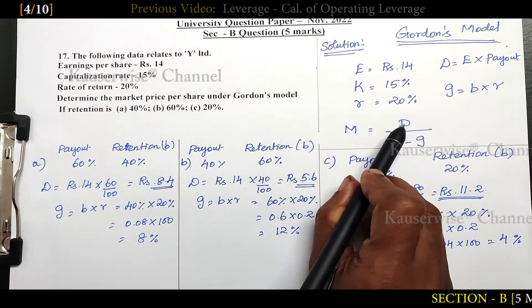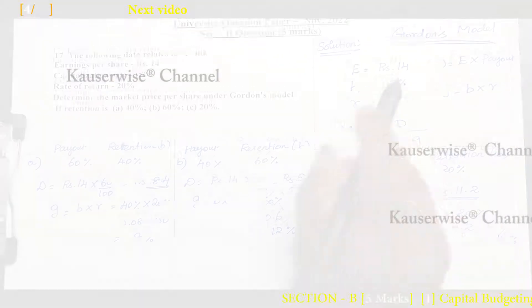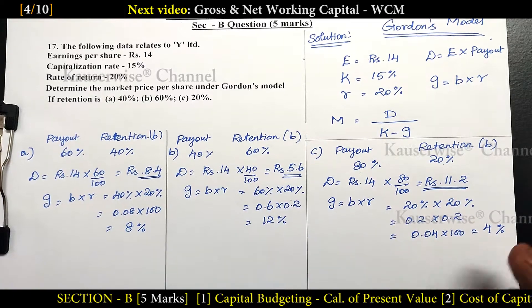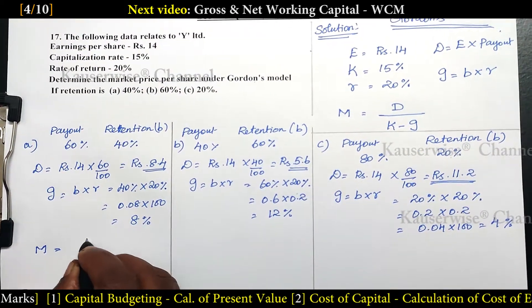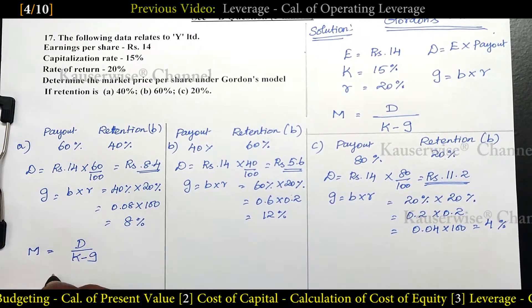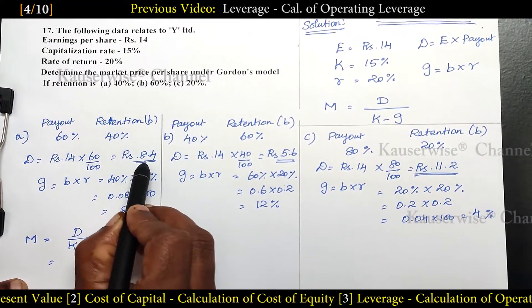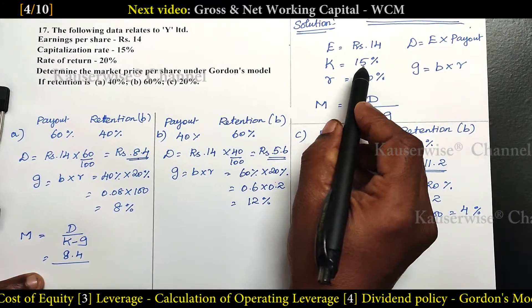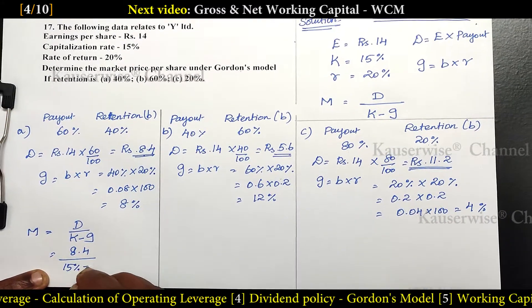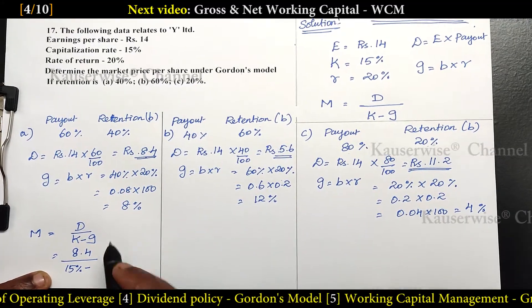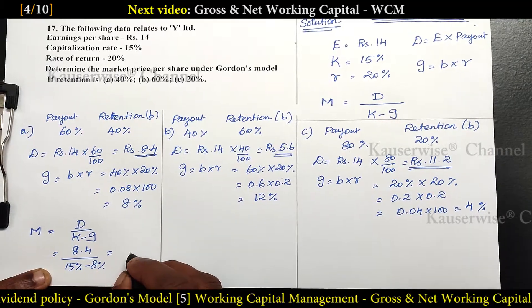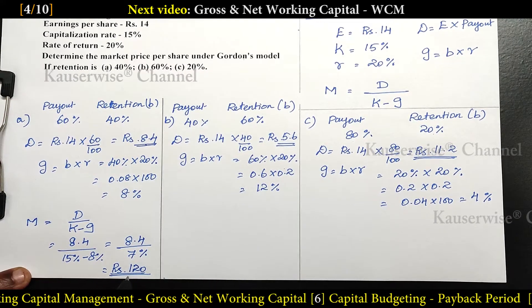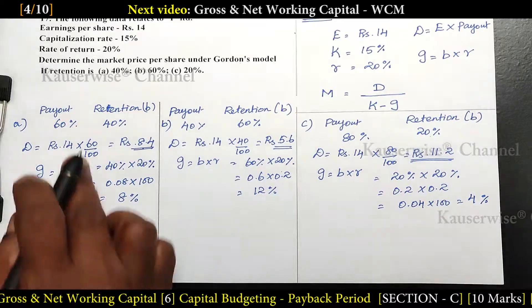Now we can substitute into the formula M = D / (K − G) for all three cases. For Case 1: M = 8.4 / (15% − 8%) = 8.4 / 7% = ₹120. This is the market price per share according to the first case.